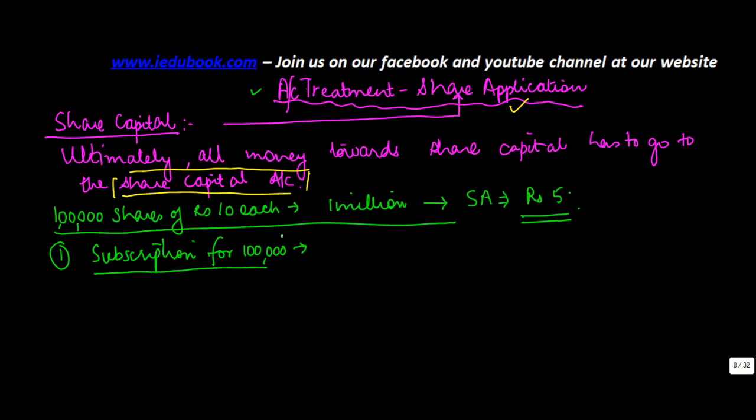So as this happened, you will get the money at the rate of rupees 5 on these 100,000 shares. So what's the total money that you receive? You will receive 5 into 100,000 or 500,000 rupees. So you will get the check of rupees 500,000. So where do you deposit the check? Bank. So you debit the bank account. Because bank is an asset account and as the asset is increased, it has to be debited.